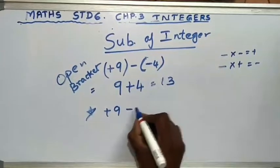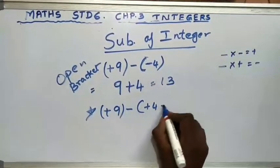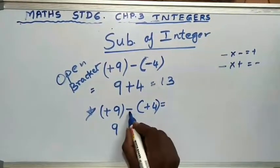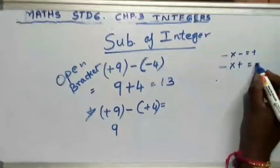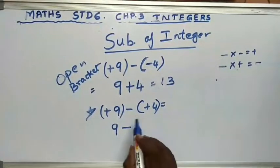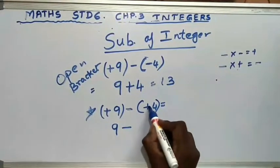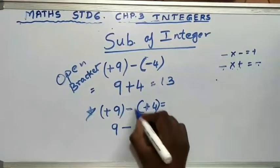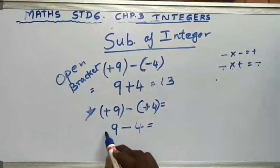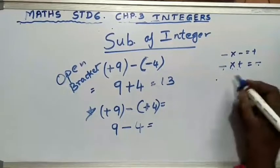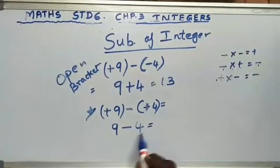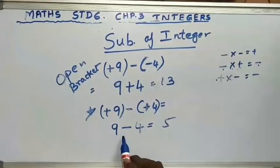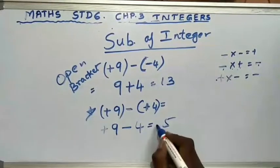Next: plus 9 minus (plus 4). Open the bracket: minus into plus is minus, so I write minus 4. So the sum is 9 minus 4. Left side plus, right side minus — plus into minus is minus, so subtract. 9 minus 4 is 5. Which number is greater? 9. And 9 has a plus sign, so the answer is plus 5.